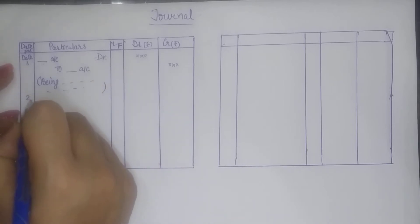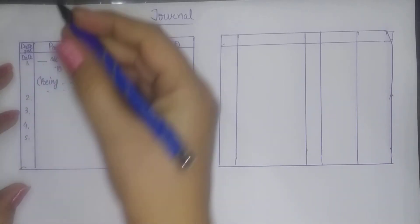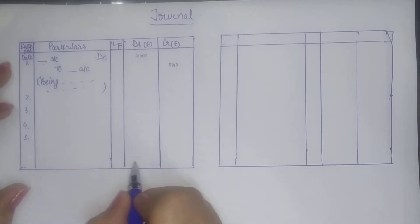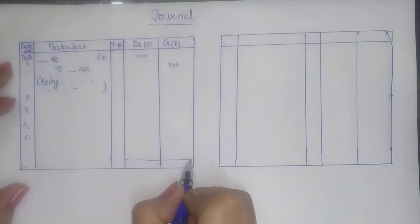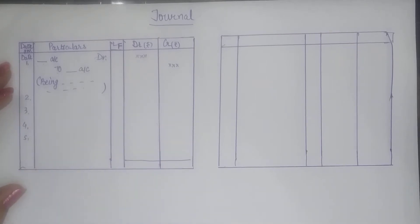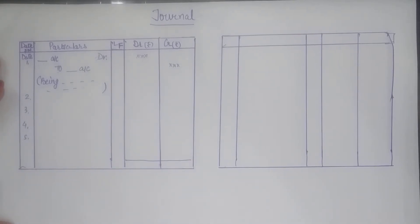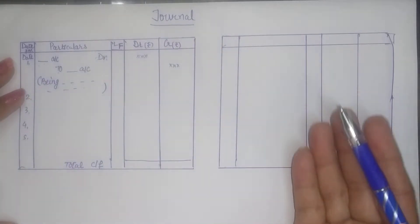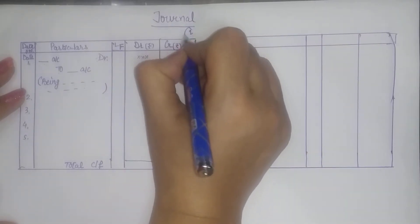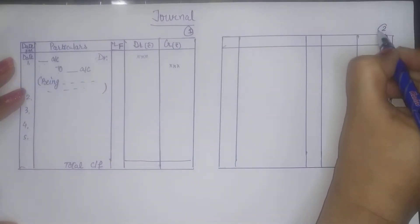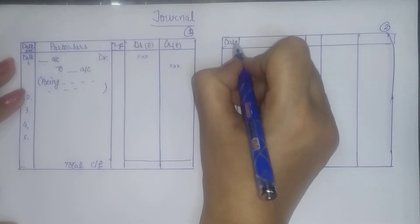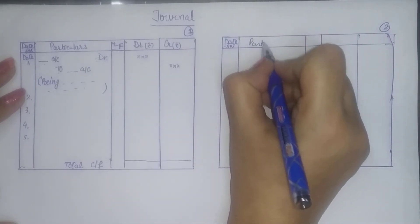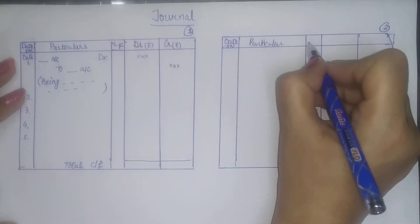You will make all the entries. Now when entries on one page are finished, that page's total is done — this is called casting of the journal. Casting means totaling. So total carried forward — CF stands for carry. Carry means we take it from here to the next page. If this is page number 1, then the next page is page number 2, where you will record subsequent transactions in sequence. So the balance is carried forward to the next page.